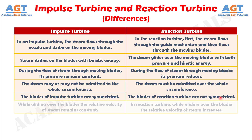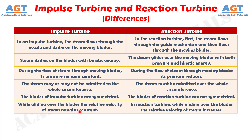Number 6: The relative velocity of steam in impulse turbine remains constant. But in reaction turbine, the relative velocity of steam increases while gliding over the blades.